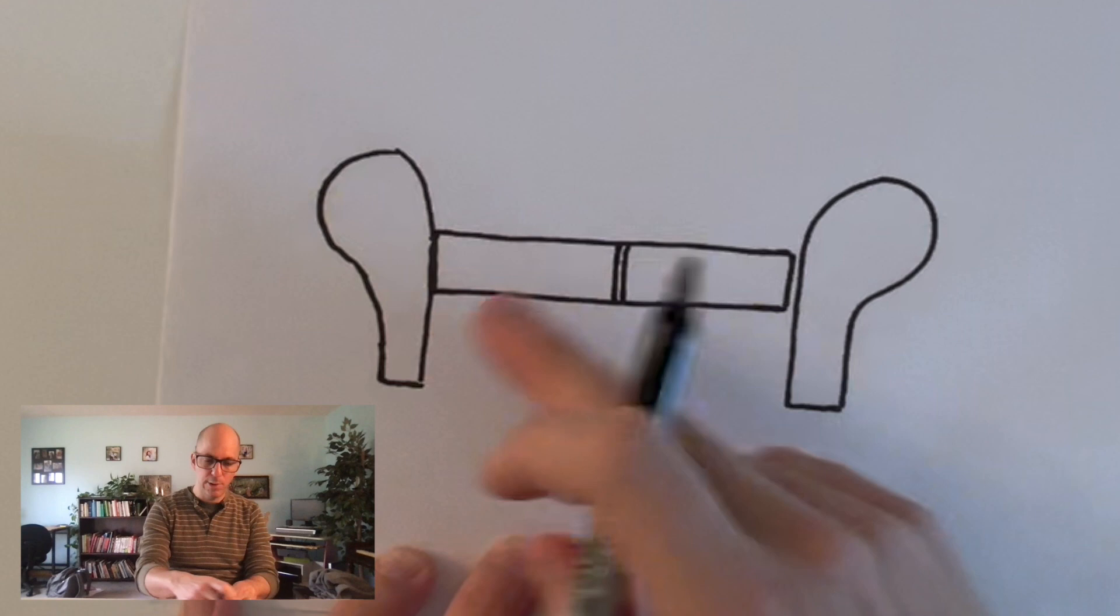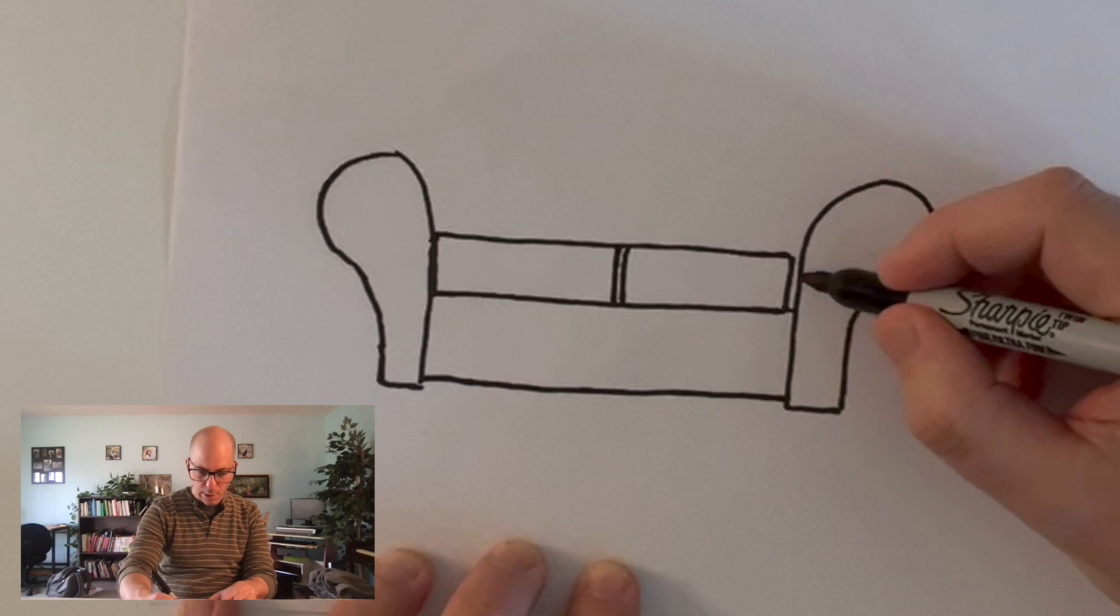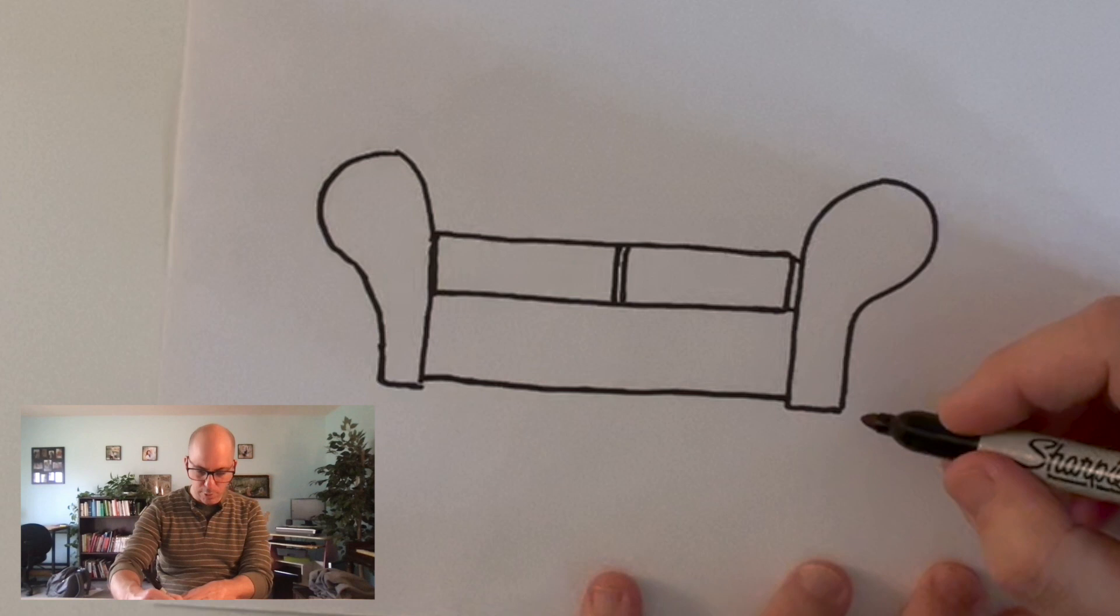I'll do the bottom of my couch here. This is of course the place where things roll underneath. Okay. So I think I'm ready to make this look a little bit more three-dimensional.